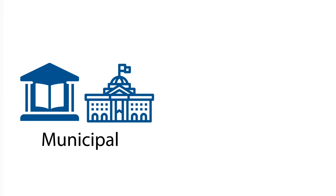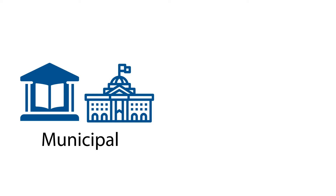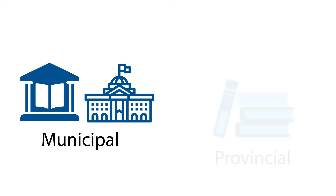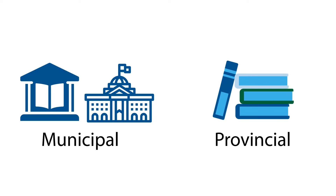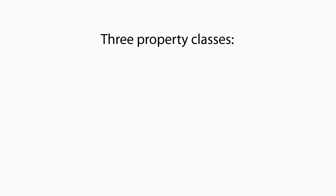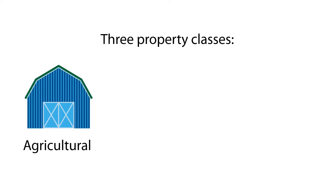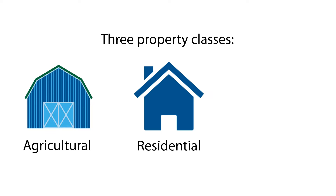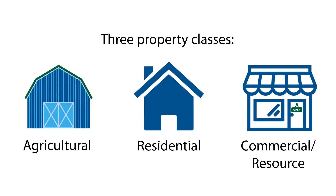Property taxes include a municipal portion, which includes municipal and library property taxes, as well as a provincial portion, which is comprised of the education property tax. Properties are classified into three classes: agriculture, residential, and commercial resource.